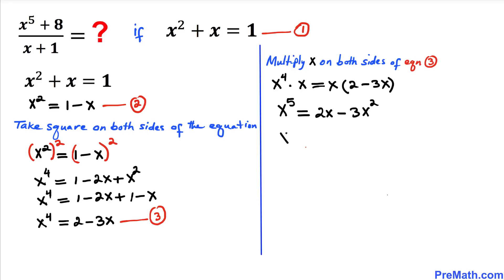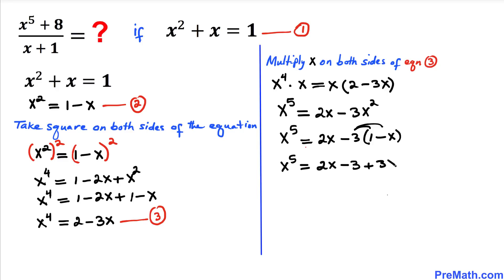Now we can see the x squared term on the right hand side. I'm going to replace it with 1 minus x as in equation two. So the equation becomes x to the power 5 equals 2x minus 3 times (1 minus x), which distributes to give negative 3 plus 3x. Combining like terms gives us x to the power 5 equals 5x minus 3. This is our crucial result.